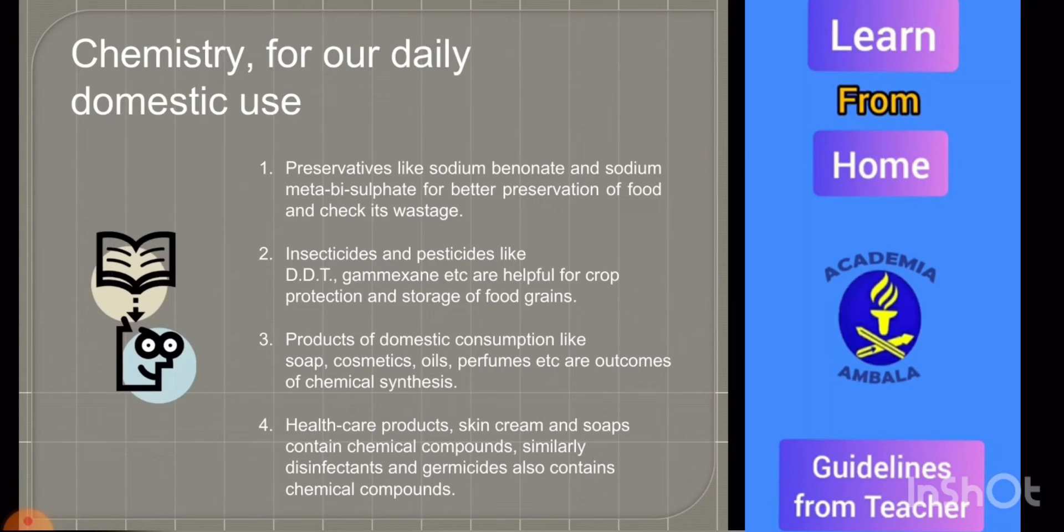Chemistry for our daily domestic use: preservatives like sodium benzoate, sodium metabisulfite for better preservation of food and check its wastage. Second, insecticides and pesticides like DDT, gamma hexane, etc., are helpful for crop production and storage of food grains.